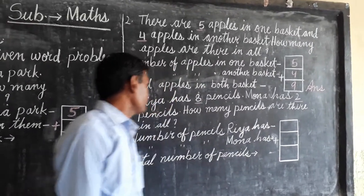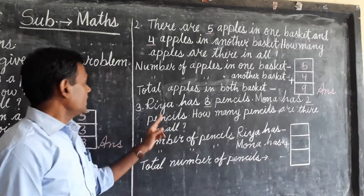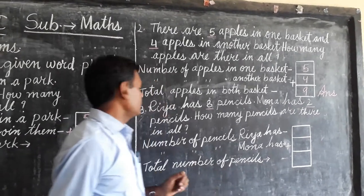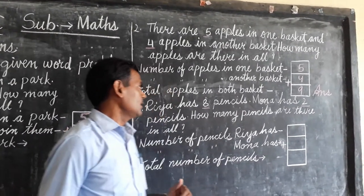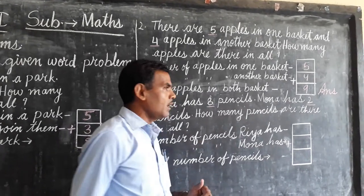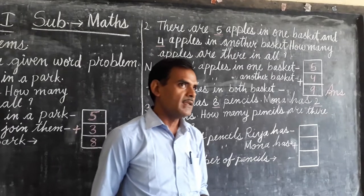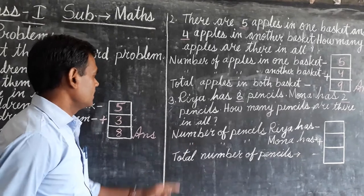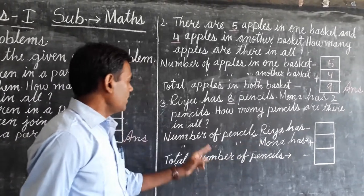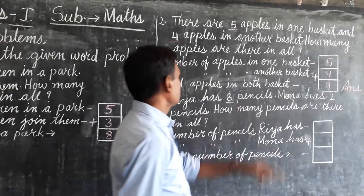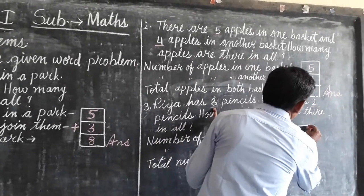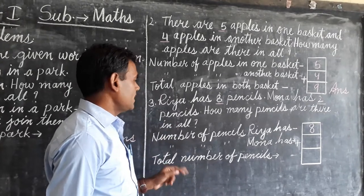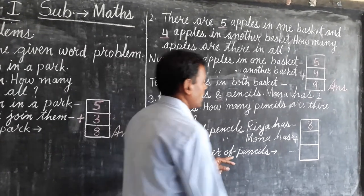Dear students, come to the third example. Rhea has 8 pencils and Mona has 2 pencils. How many pencils are there in all? Now, you write a statement like this. Number of pencils Rhea has — you write here 8. Then, Mona has 2 pencils — you write here 2.